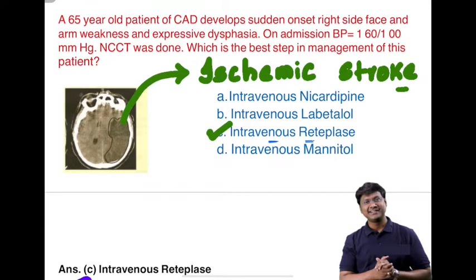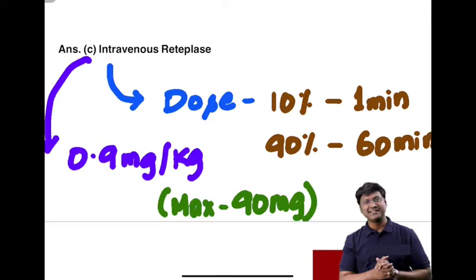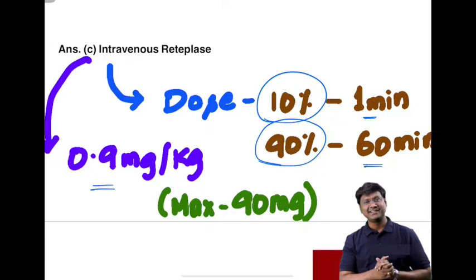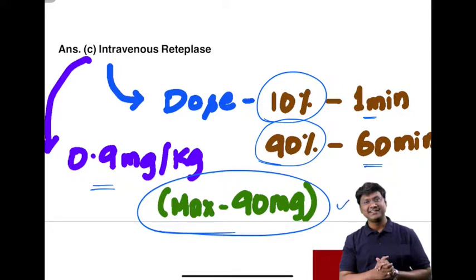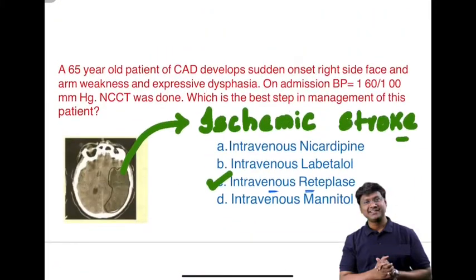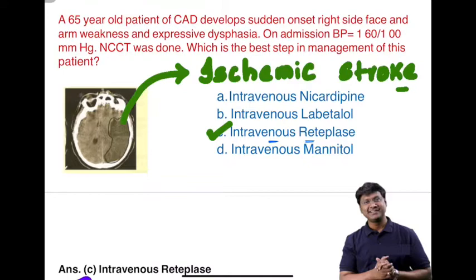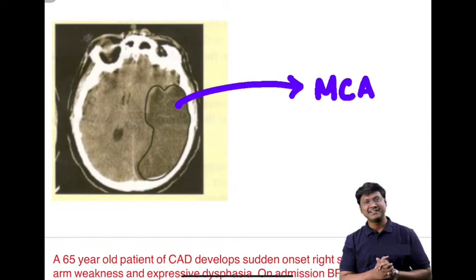This patient is an ideal candidate for intravenous rt-PA, which is thrombolysis. The dosage: 10% of the dose is given in the first minute, and the remaining 90% over 60 minutes. The dose of rt-PA is 0.9 mg/kg body weight, with a maximum dose of 90 mg. The ischemia in this CT scan has developed in the MCA territory — middle cerebral artery territory on the left side — which explains the right-sided face and arm weakness.